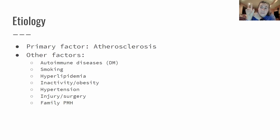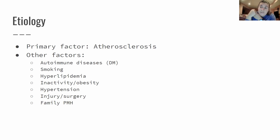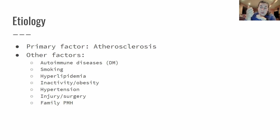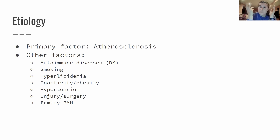Hyperlipidemia - that is a lot of fat in the blood - and obviously that fat has to build up somewhere. It's building up on the artery walls causing atherosclerosis. A lot of these factors can happen due to a very sedentary lifestyle or being overweight or obese, contributing to a high fat diet and inactivity. Hypertension: as the blood vessels narrow the pressure increases - like putting your finger over a hose, the water shoots out faster and farther. Injury or surgery can also cause it, and family history and genetics contribute as well.